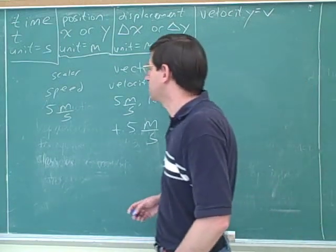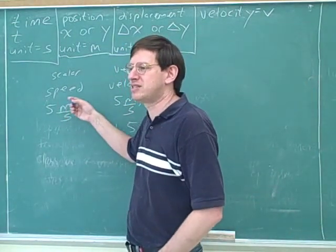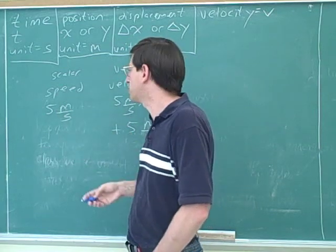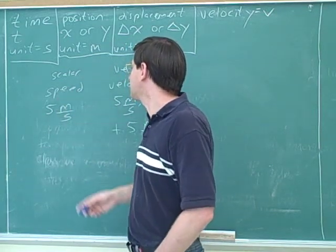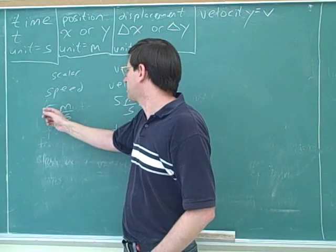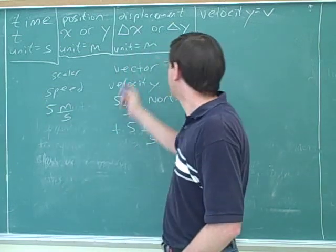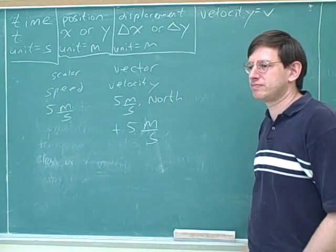So a vector is something which is not fully described unless you've given a direction. And a scalar is something which you can fully describe without a direction. That's about the best definition we can give. So we can see that speed is a scalar because it's fully described without giving a direction. But for the vector, we have to put in the direction.